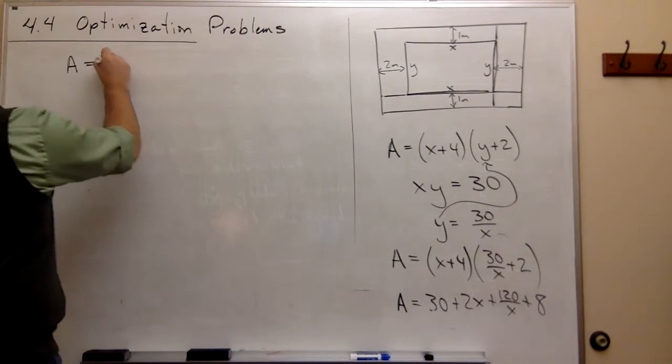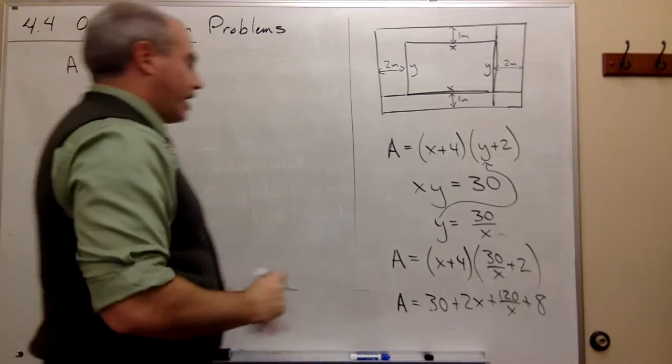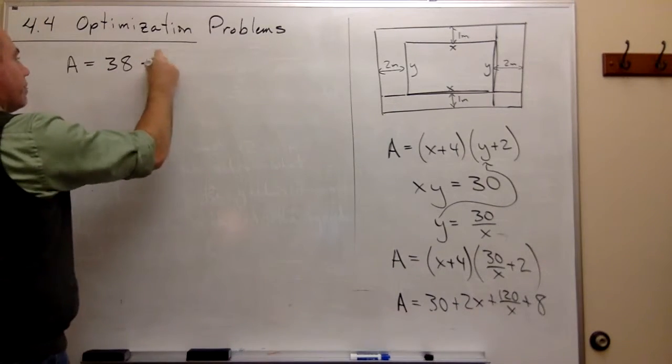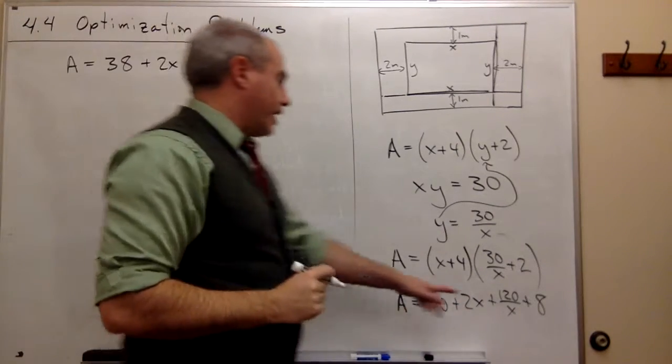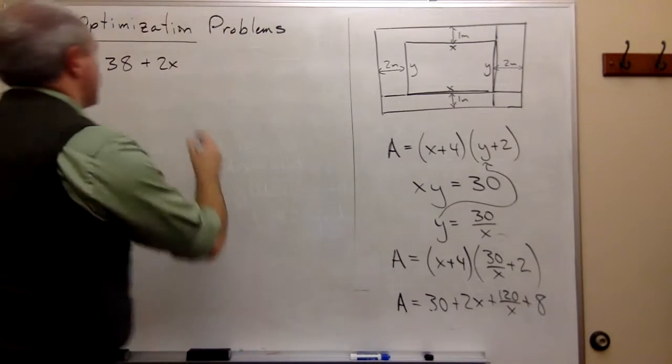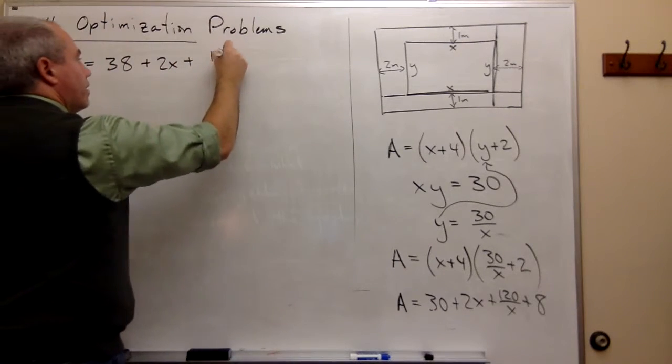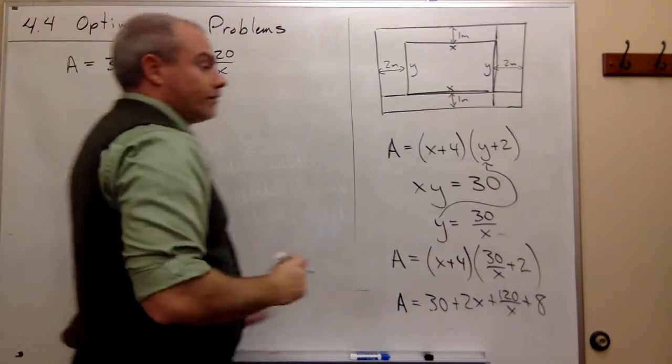And what I get is that the area is equal to—well, I've got 30 plus 8, so 38. I've got 2x plus 2x. And I've got 120 over x. So plus 120 over x.